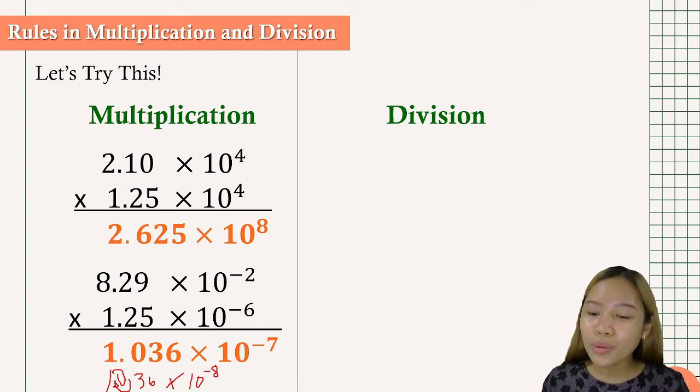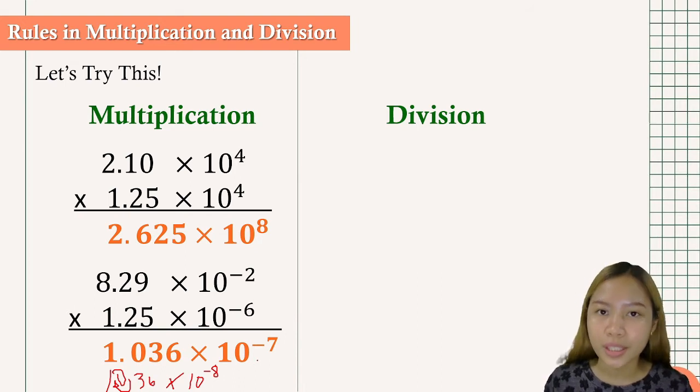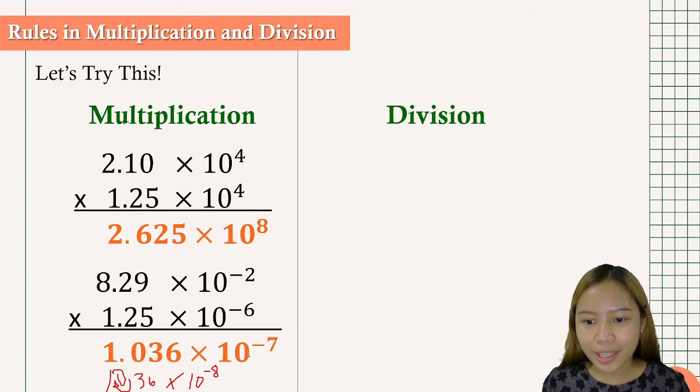So since we moved going to the left, of course, we add one to the exponent. So we have negative 8 plus 1 will become negative 7. So there it is.